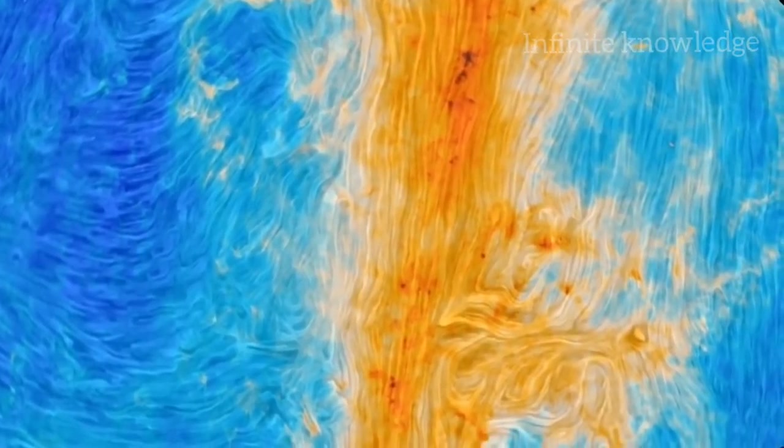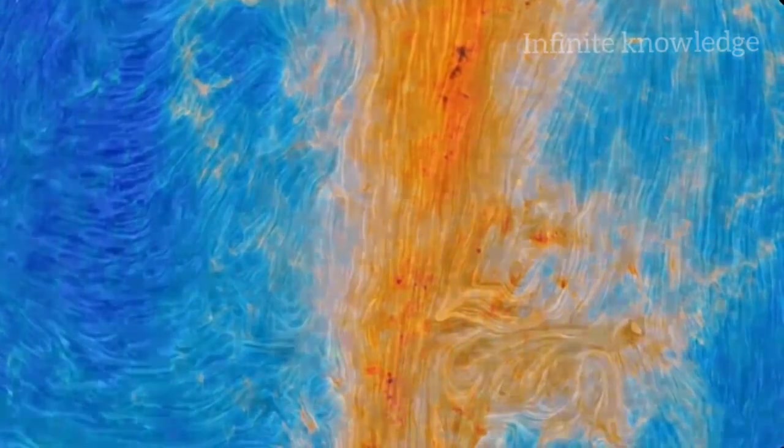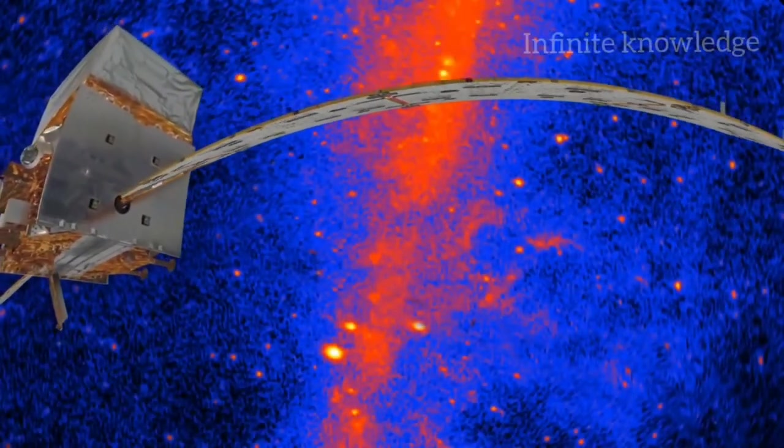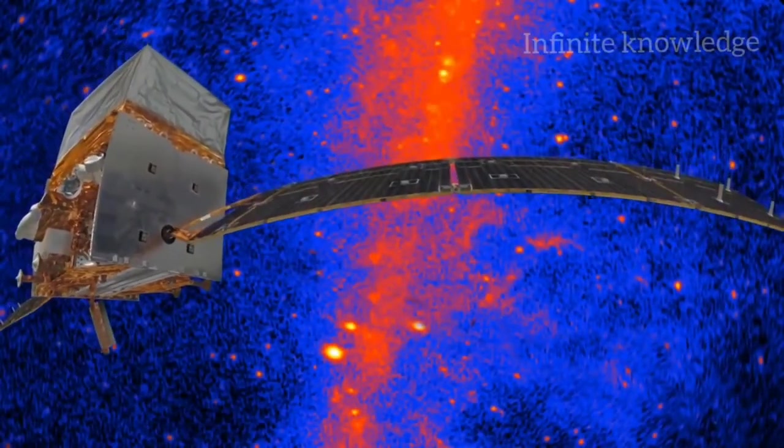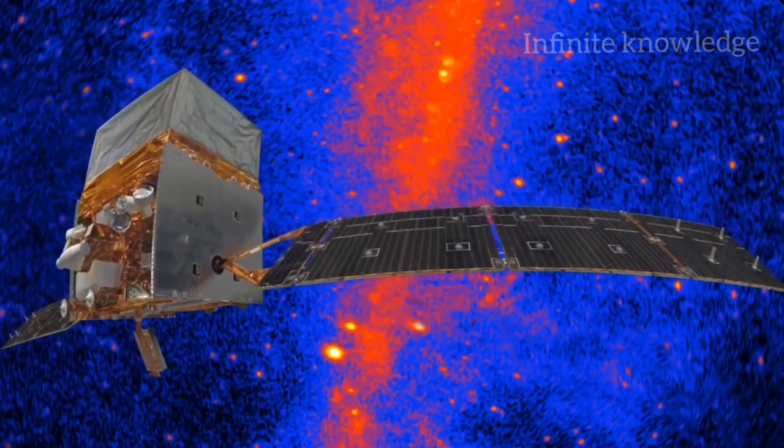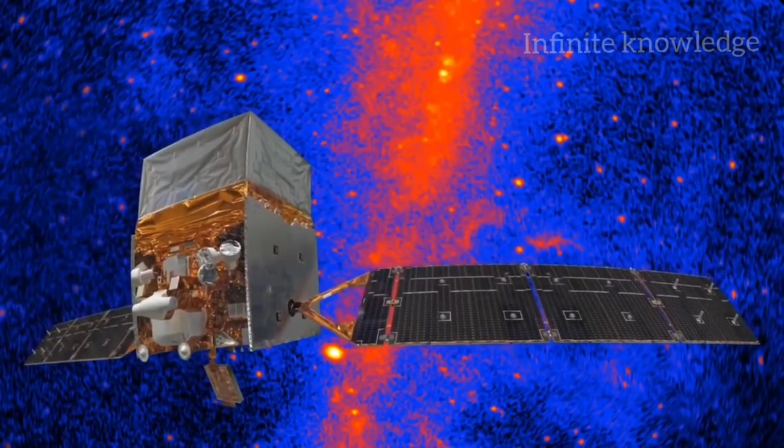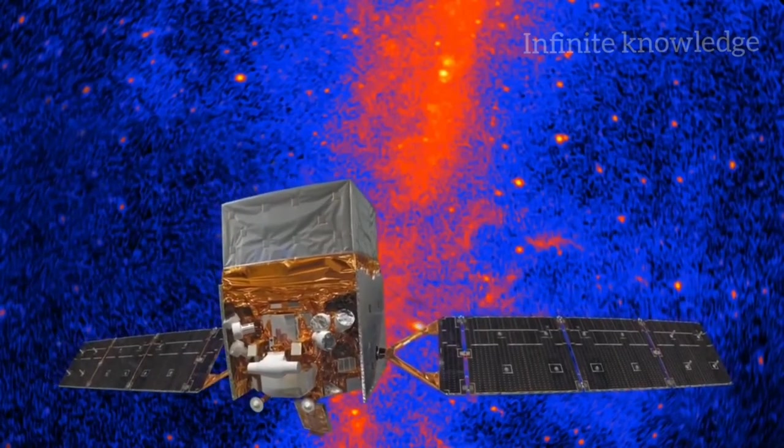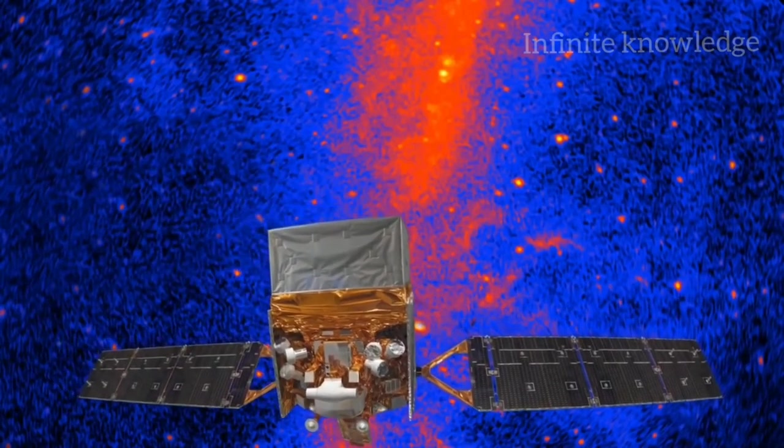Our galaxy also looks very different in gamma rays, the most energetic part of the spectrum. Orbiting gamma ray observatories like Fermi can pinpoint the most energetic light sources in the universe. These are often collapsed stars with tightly wound magnetic fields focusing the light they emit.